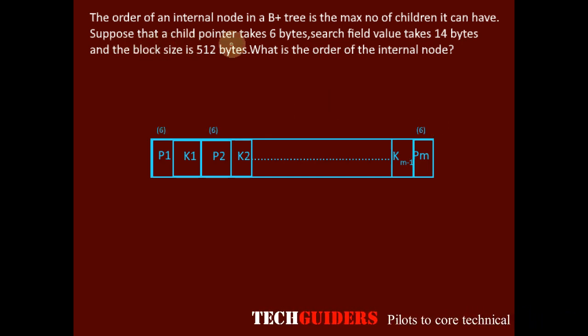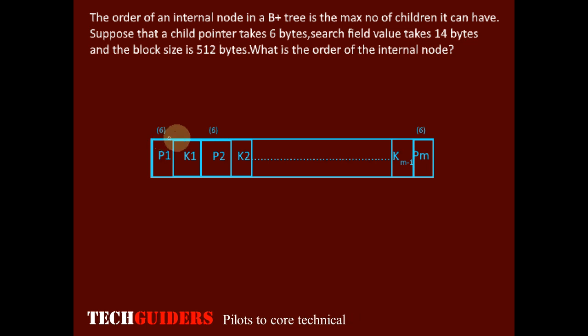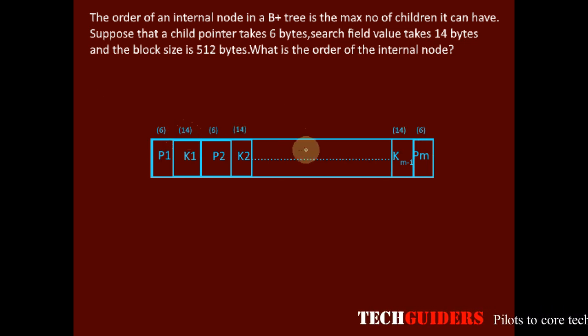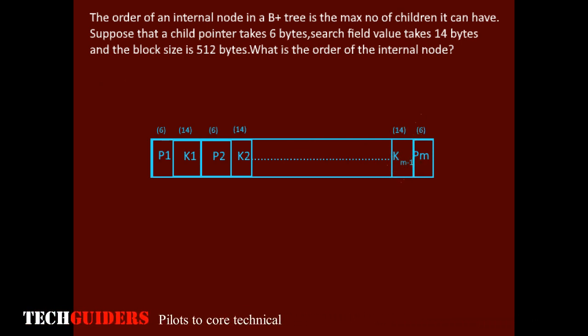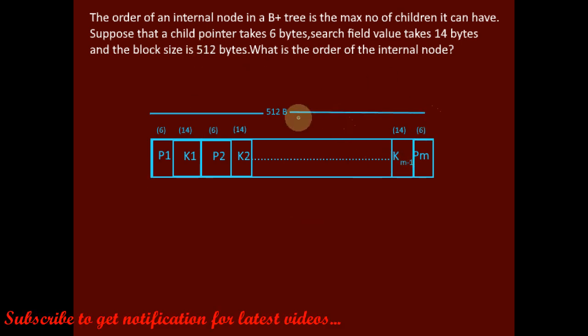It's given the size of the child pointer is 6 bytes, then there will be m child pointers each of size 6 bytes. And the search field value takes 14 bytes. There will be maximum m-1 keys, each of size 14 bytes. And the size of the internal block or the internal node is 512 bytes.